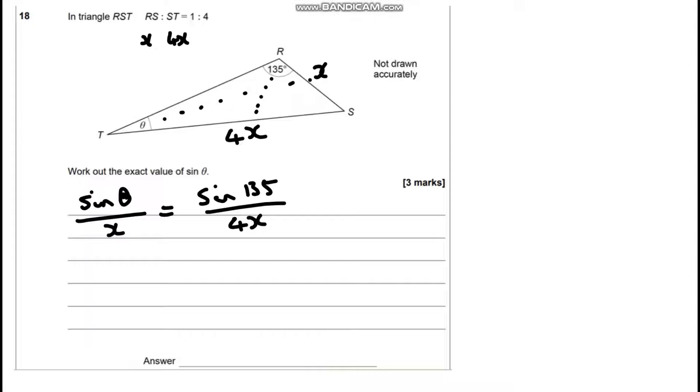Now, the aim of this question is to work out an exact value of sine theta. So we're going to rearrange this, multiply both sides by X. They're going to cancel on both sides, so we're going to end up with sine theta is sine 135 over 4.